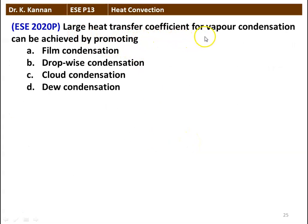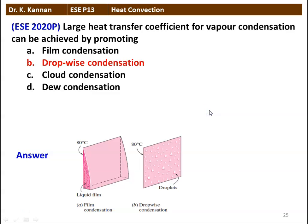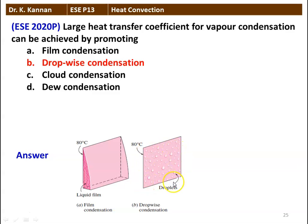Next question: large heat transfer coefficient for vapour condensation is achieved by (A) film condensation, (B) drop-wise condensation, (C) cloud condensation, or (D) dew condensation. The answer is drop-wise condensation. In film-wise condensation, a film of water remains on the plate surface and incoming vapour must penetrate the liquid film to reach the surface. In drop-wise condensation, the condensate forms droplets, giving freshly entering vapour direct access to the surface, so the rate of condensation and heat transfer coefficient are much higher. However, maintaining drop-wise condensation is very difficult.